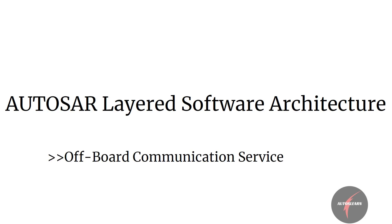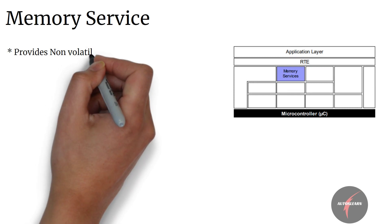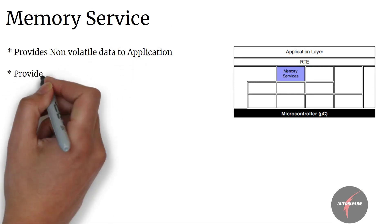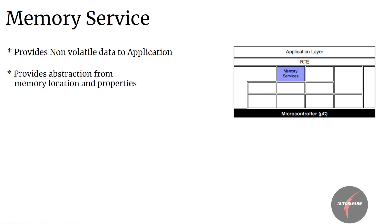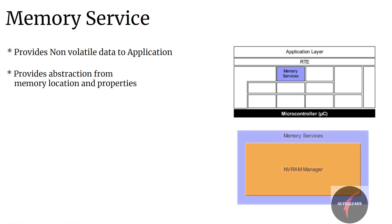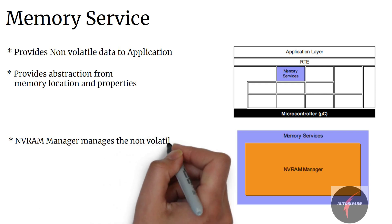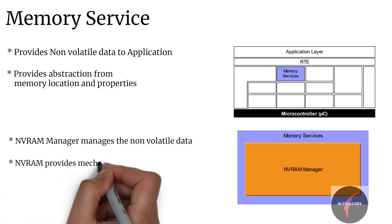Now let's have a look into the memory service of the service layer. Memory service provides non-volatile data to applications in a uniform way. The service provides abstraction from memory location and properties. Memory service consists of only one module: the NV-RAM Manager.